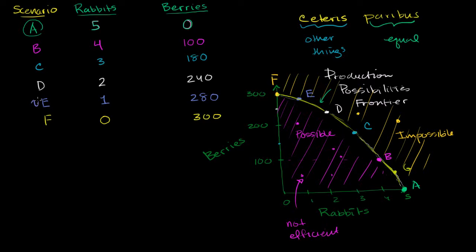Let's say we've been hanging out in Scenario E for a bunch of days. On average, we've been catching one rabbit but gathering 280 berries. We were, I guess, in a berry mood. So this is Scenario E right over here.